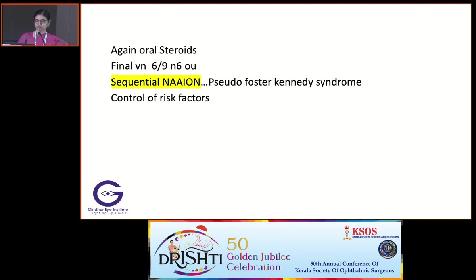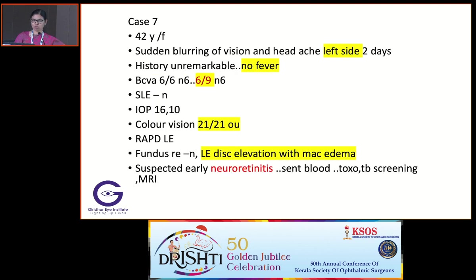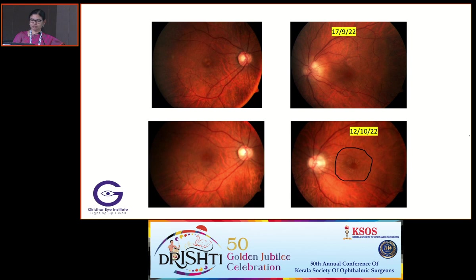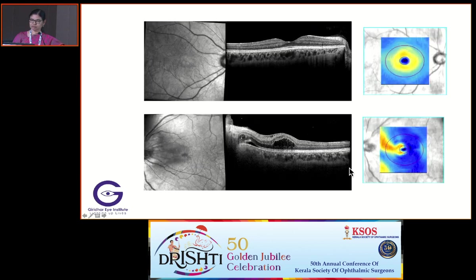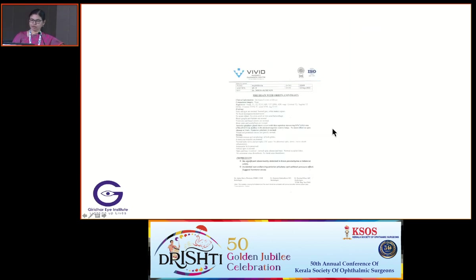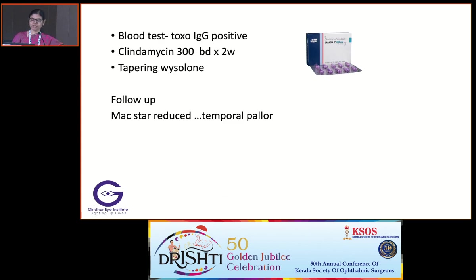A 42-year-old female with sudden blurring of vision with left-sided headache, two days duration. No fever, color vision normal, no RAPD in the left eye. There was left-eye disc elevation with macular edema, so we suspected neuroretinitis and blood was sent for testing. The fundus showed a macular star with disc edema. MRI was normal, and toxo-IgG came out positive. Treated with clindamycin and prednisolone, and she improved.